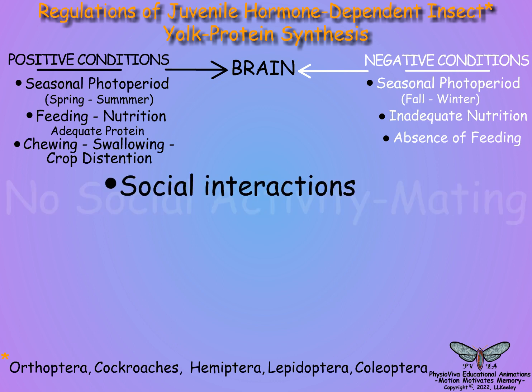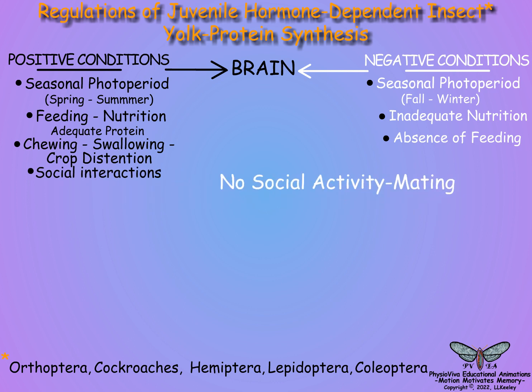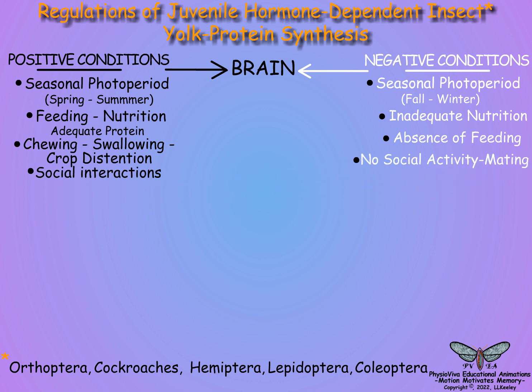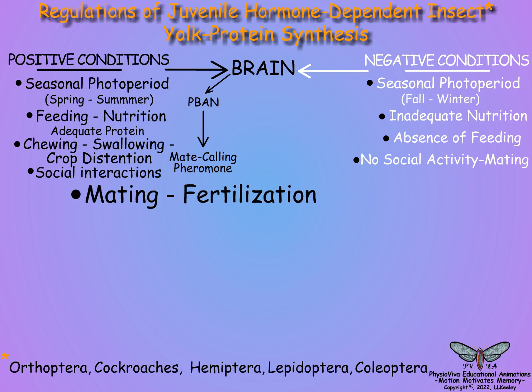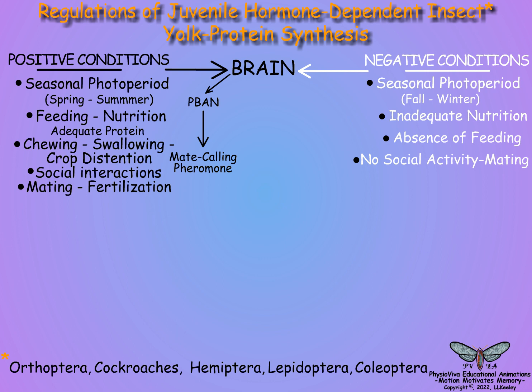Ovarian maturation may require social interactions and sensory stimuli that cause release of a pheromone biosynthesis activating neurohormone, resulting in female pheromone production and calling behavior for mate finding. Mating activity in the presence or absence of sperm in the spermatheca may stimulate vitellogenesis through the central nervous system and brain neurosecretory activity.